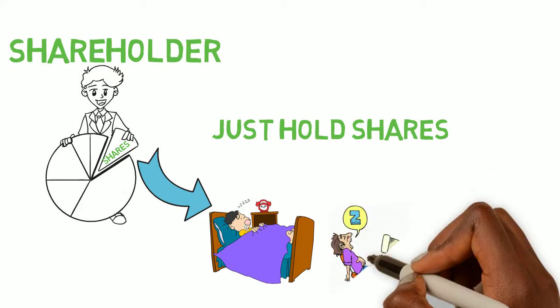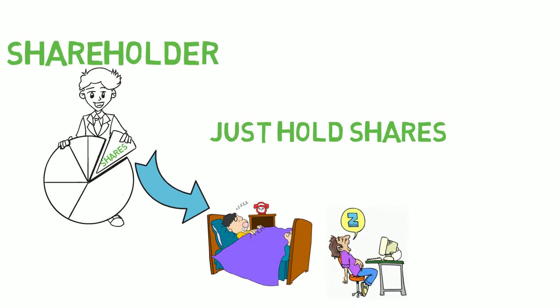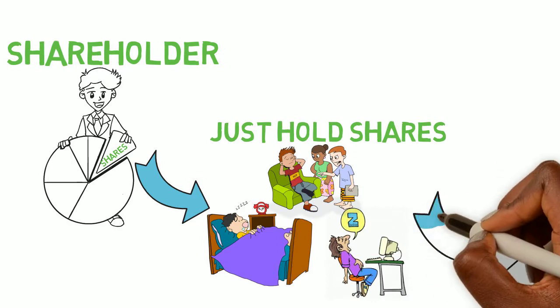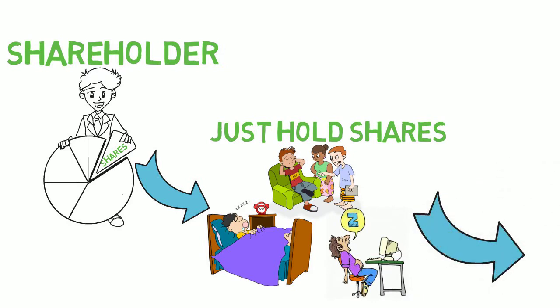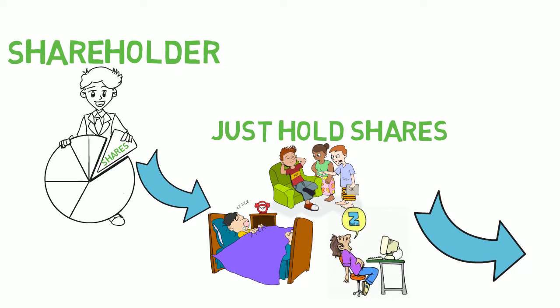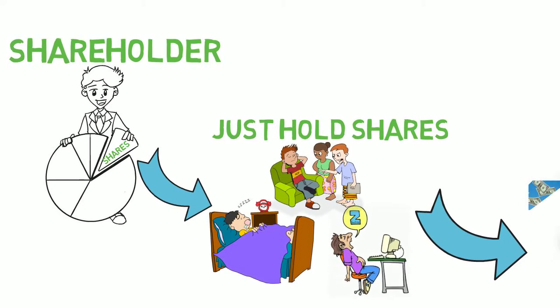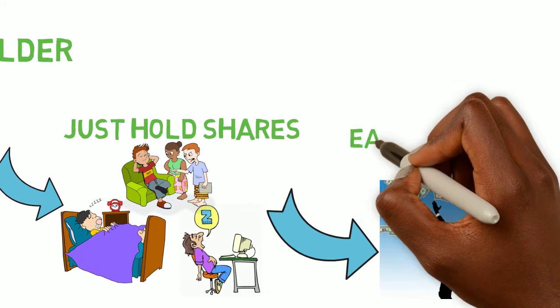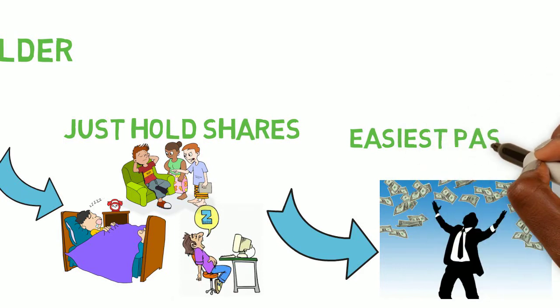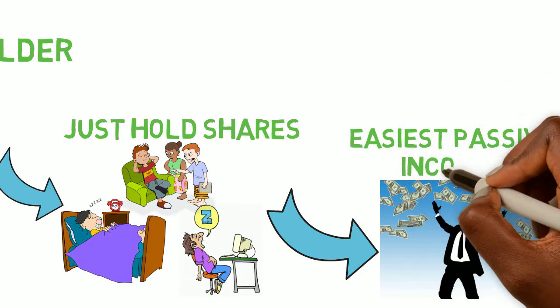I don't have to show up to work for that. So you mean, all I have to do is just buy some dividend paying company shares and I just have to hold it? I don't have to punch in the clock or be presently active for work? Yes, that's exactly what you have to do. That's why it's the easiest passive income.